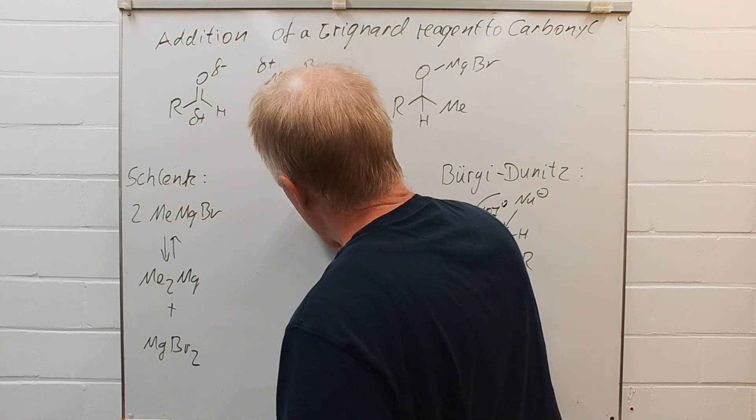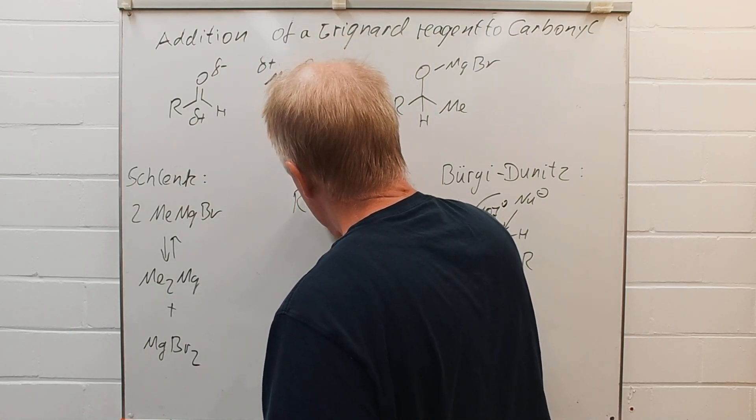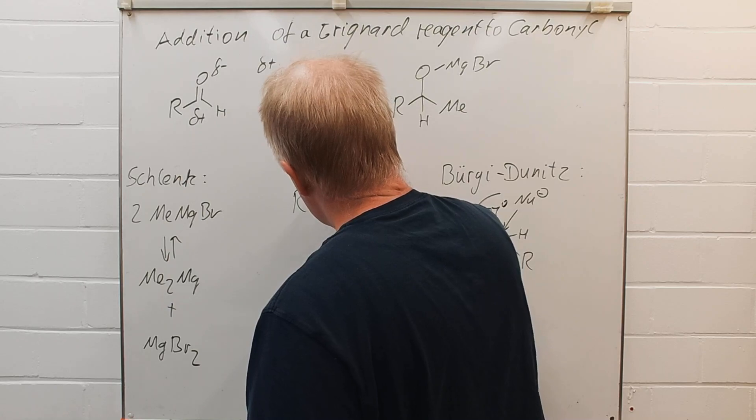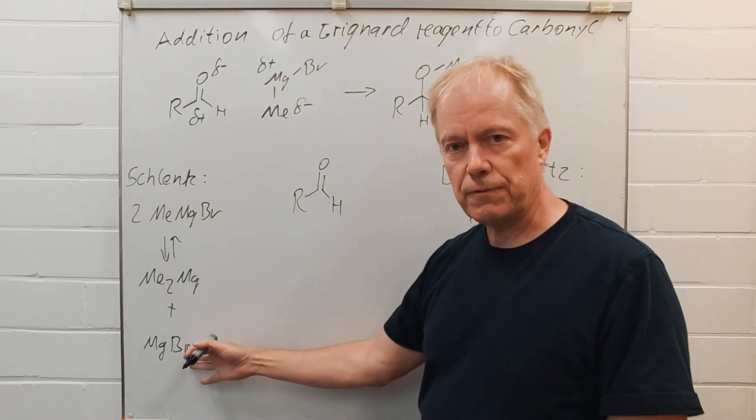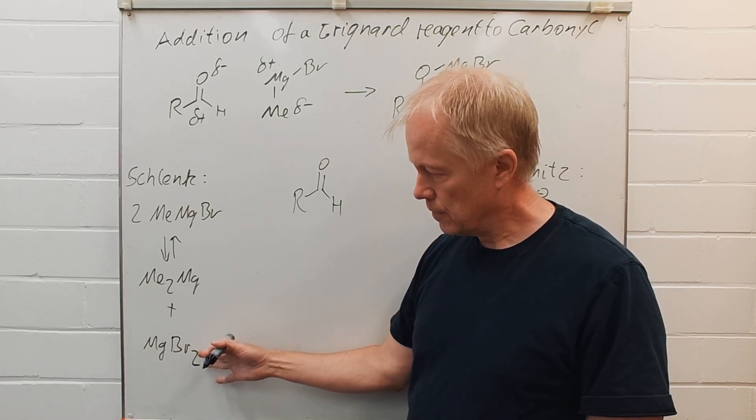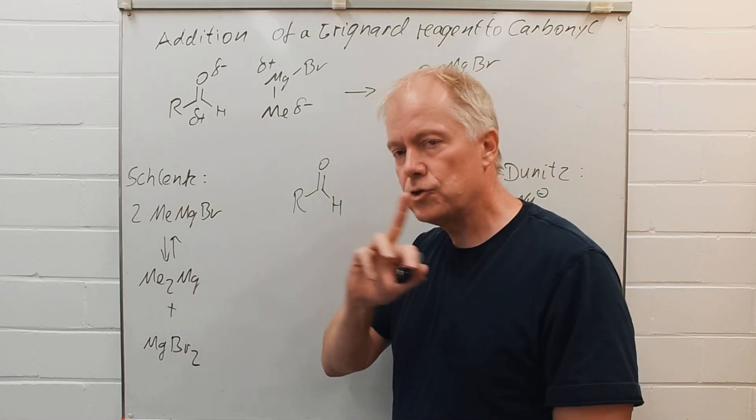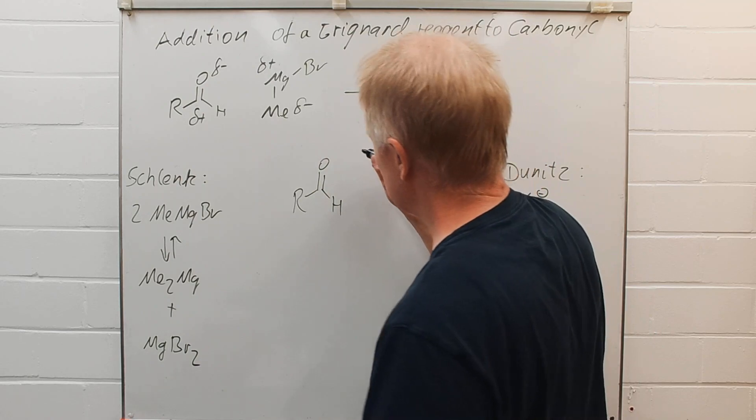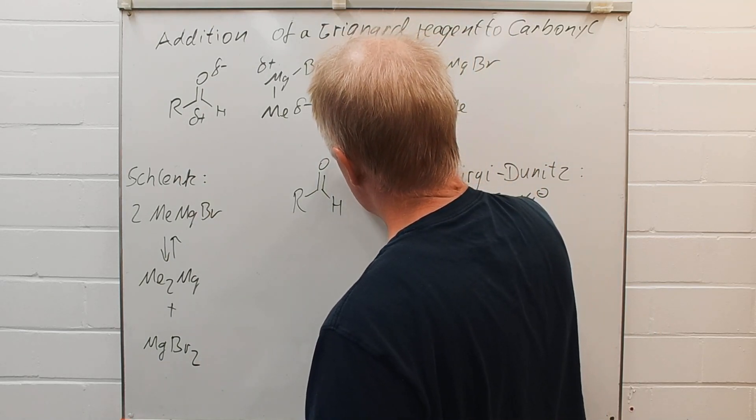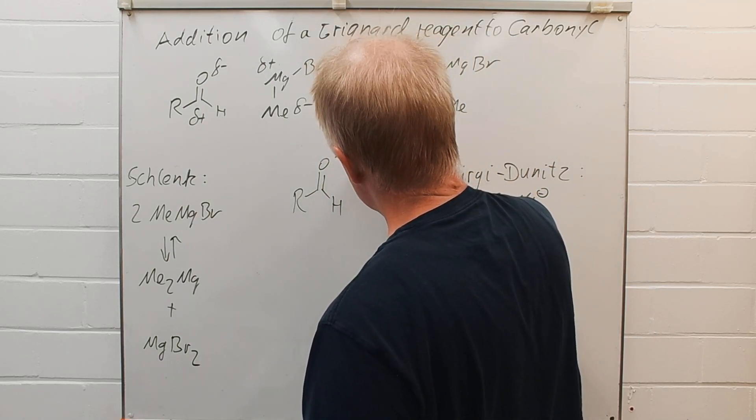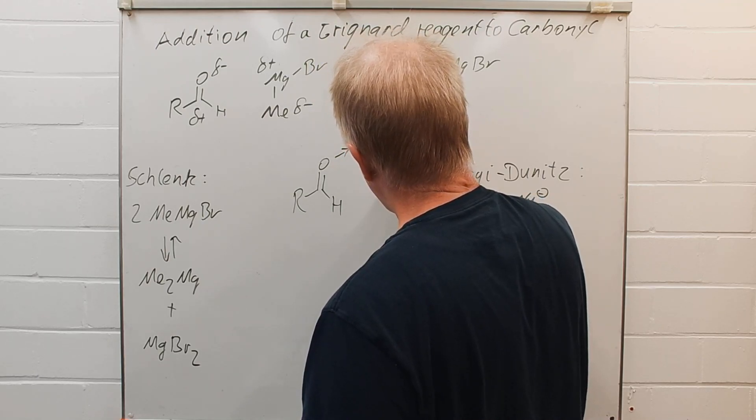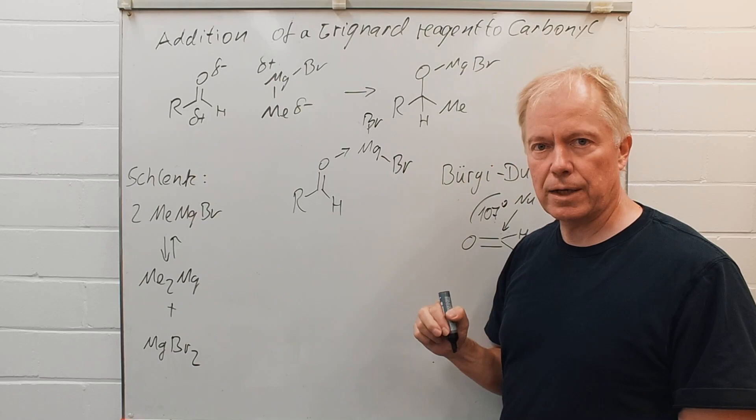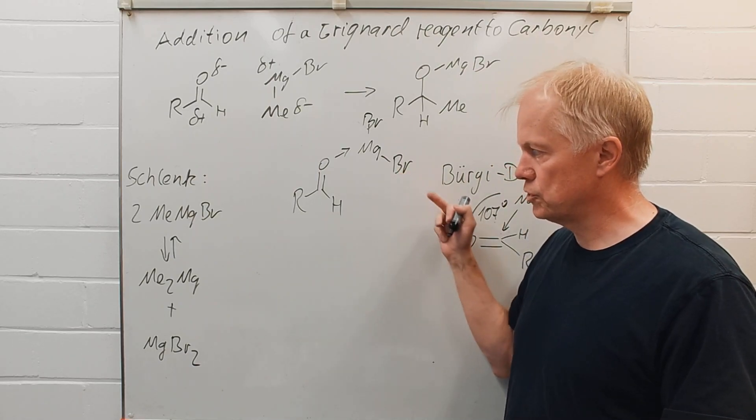Let's draw again the aldehyde functionality. Methyl magnesium bromide is a Lewis acid and can coordinate to the carbonyl group. Now the bromide is a Lewis base.